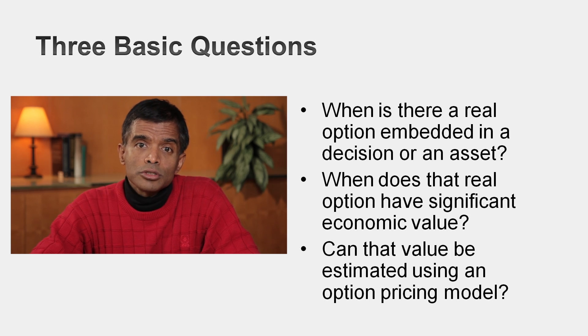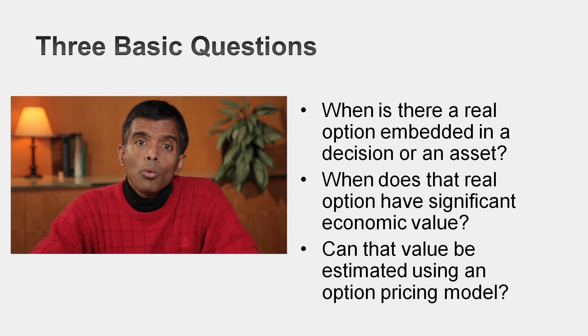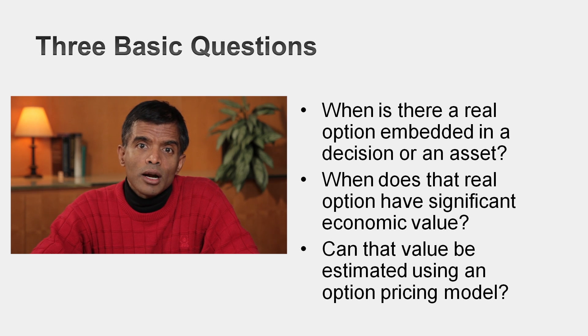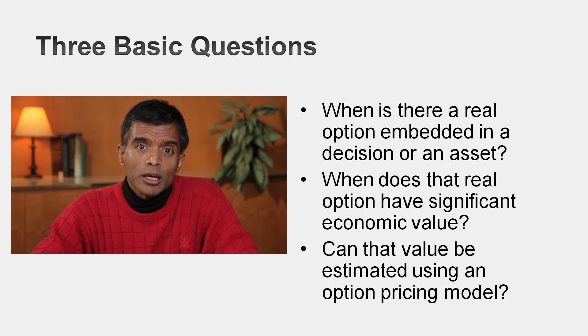There's learning from looking at the oil price and adaptive behavior because it changed the production based on that price. That's what you're looking for in real options: is there a capacity to learn and can I change my behavior to make a business or asset more valuable? So here are the three basic questions I'd like to answer when applying option pricing to value businesses. First, when is there an option in a decision? Second, when does that option have significant economic value?